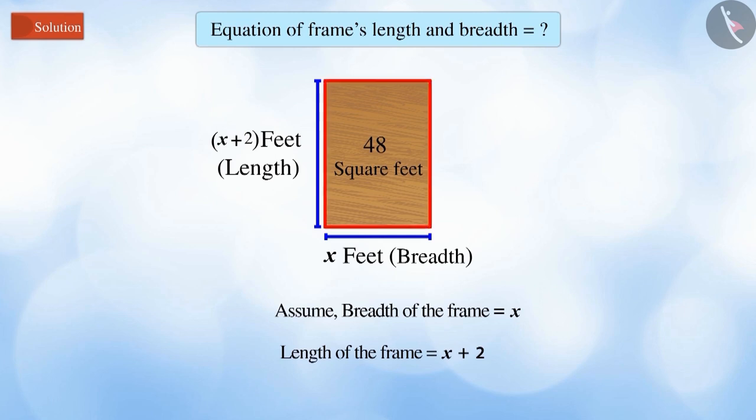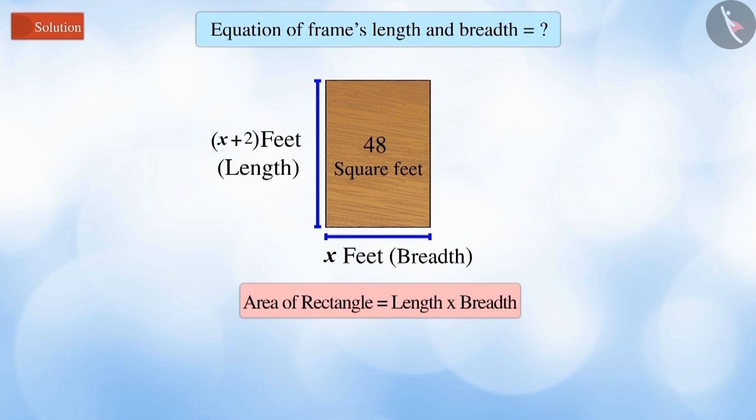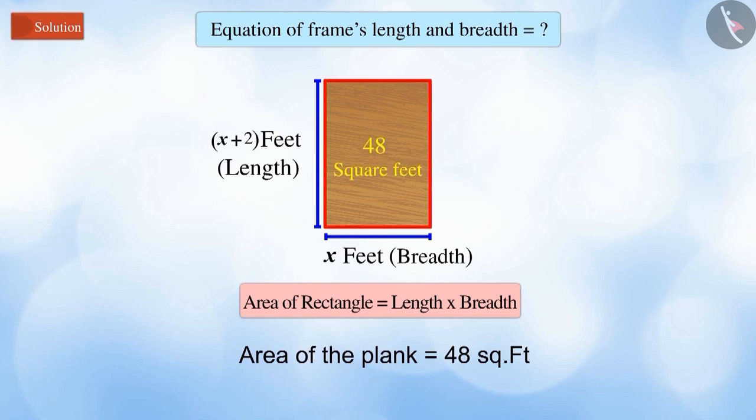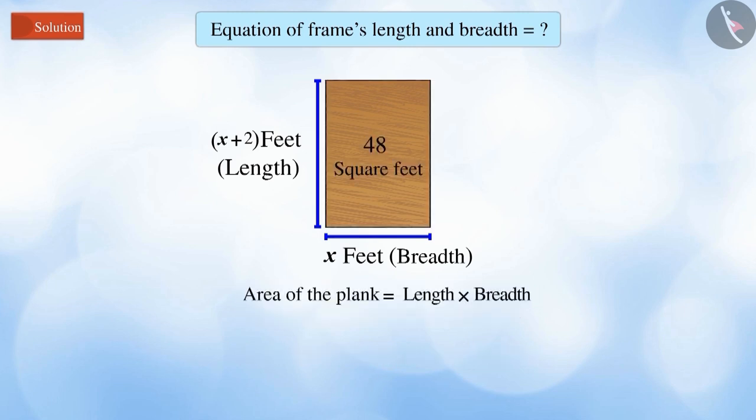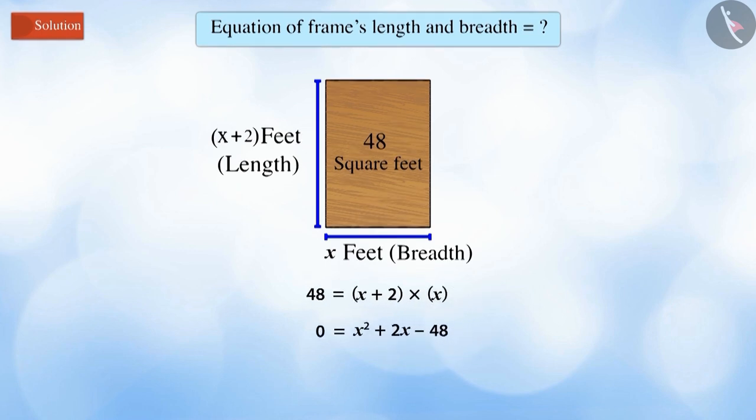We know that the wooden plank is rectangular, so we use the formula for the area of a rectangle. It's given that the area of the rectangle is 48 square feet. Substituting all the values given above in the formula of the area, on solving, we get x raised to 2 plus 2x minus 48 is equal to 0.